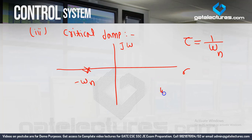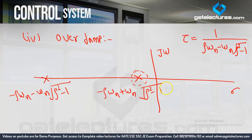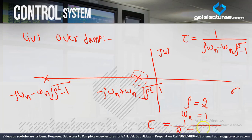For overdamped, assume zeta = 2 and omega_n = 1. Then tau = 1/(2×1 − 1×sqrt(4−1)) = 1/(2 − sqrt(3)) ≈ 1/(2 − 1.732) = 1/0.268 ≈ approximately 4. So tau of overdamped is approximately 4, which is greater than tau of underdamped (which was 2), which is greater than tau of critically damped (which was 1).